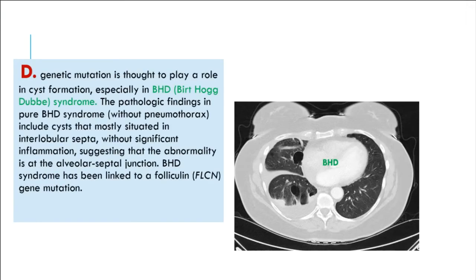D. Genetic mutation is thought to play a role in cyst formation, especially in Birt-Hogg-Dubé (BHD) syndrome. The pathologic findings in pure BHD syndrome, without pneumothorax, include cysts mostly situated in interlobular septa without significant inflammation, suggesting the abnormality is at the alveolar septal junction. BHD syndrome has been linked to a folliculin (FLCN) gene mutation.